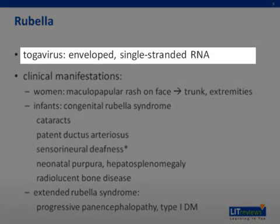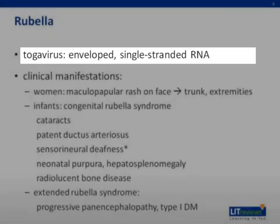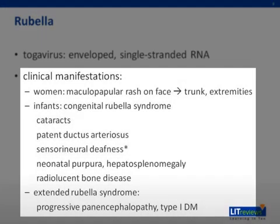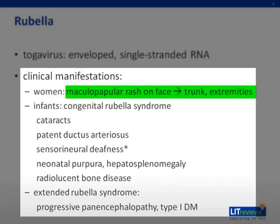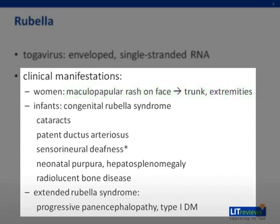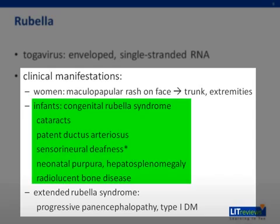Rubella, or German measles, is an enveloped, single-stranded RNA togavirus. 50% of infections in adults are subclinical, but if there are symptoms, they are usually mild and flu-like, with a maculopapular rash that starts on the face and spreads to the trunk and extremities. 80% of pregnant women infected in the first trimester who develop the rash will transmit the virus to their fetus. In infected infants, there is the classical congenital rubella syndrome, which includes multi-organ manifestations.